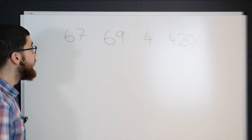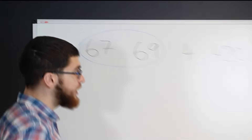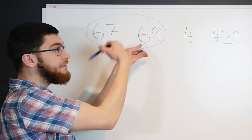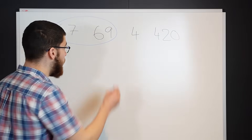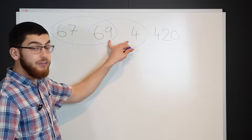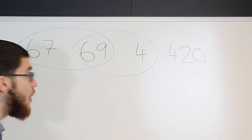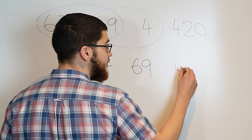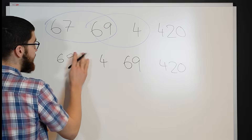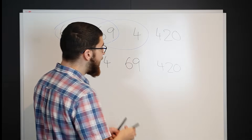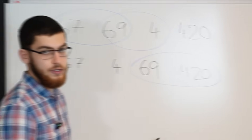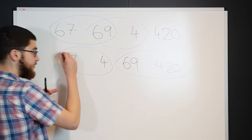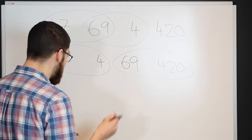Next is bubble sort. With bubble sort, all you need to do is make a bubble out of pairs of numbers and ask yourself the question: do these need to swap? The answer in this case is no, because the one on the left is smaller, which is what we want. Do 69 and 4 need to swap? The answer is yes, because the one on the right is smaller, and that is wrong. So we swap the 4 and the 69, and we keep the rest of them in the same position, but we haven't yet checked the last pair, which is 69 and 420, but those are in the correct position.